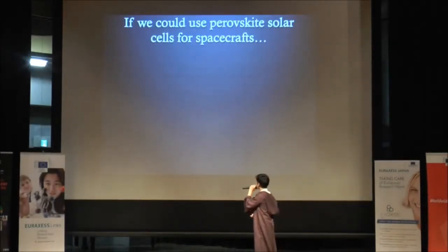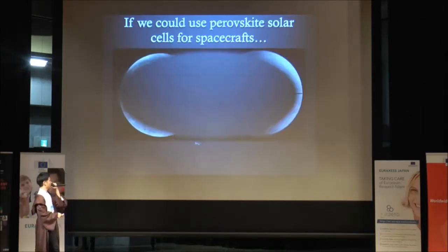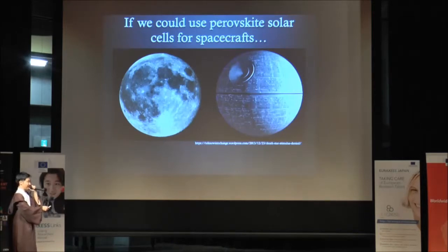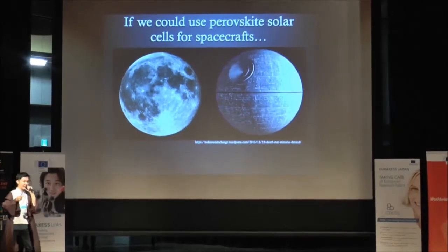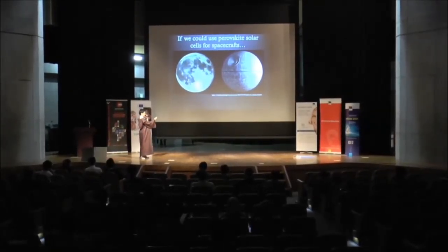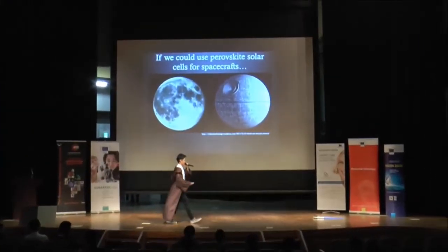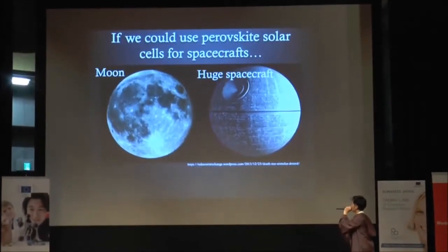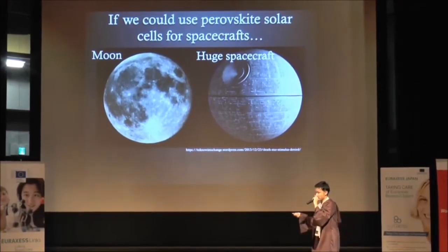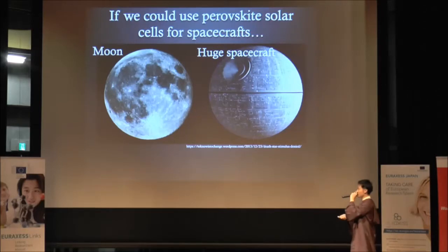If we want to use perovskite for a spaceship, we could make this kind of spaceship. I would like to ask everybody: which one in the picture is the real moon? Left or right? Raise your hand. If you think the left is the true moon, raise your hand. The left one is the moon; the right one is a huge spacecraft I'm dreaming of. If we can use perovskite solar cells for this huge spacecraft, our dream to live in the universe could come true, because the huge spacecraft has a capacity for millions of people. This is my dream.